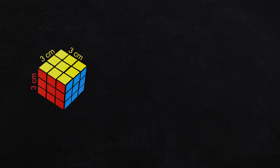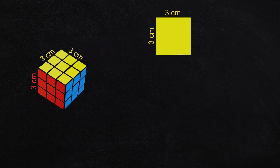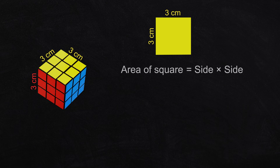We'll start with the volume of this cube. The top and bottom is a square of the same size. First we calculate the area of this square. The rule is: area of square equals side multiplied by side. That's 3 centimeters multiplied by 3 centimeters, which is 9 square centimeters.